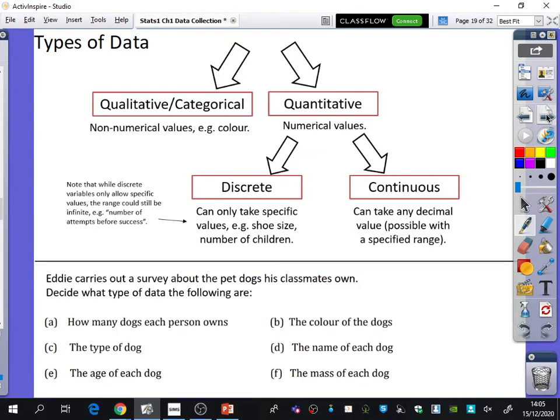The next part of collecting data is a recap from GCSE. It's to do with different types of data, and you need to know how to classify different kinds of information that you might be gathering. I've done it as a bit of a flow diagram. You start at the top. The first thing you need to decide is if something is qualitative, which means it's categorical, or if something is quantitative.